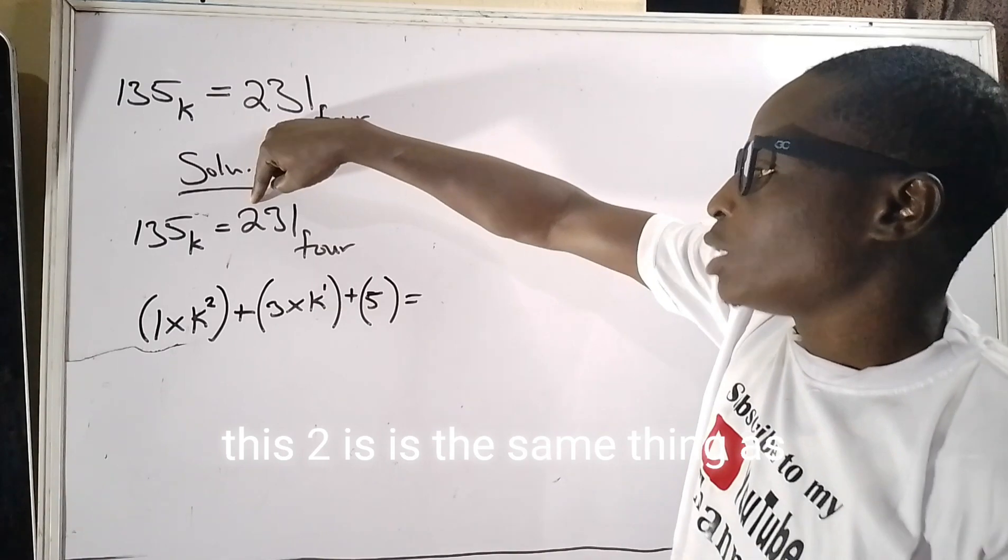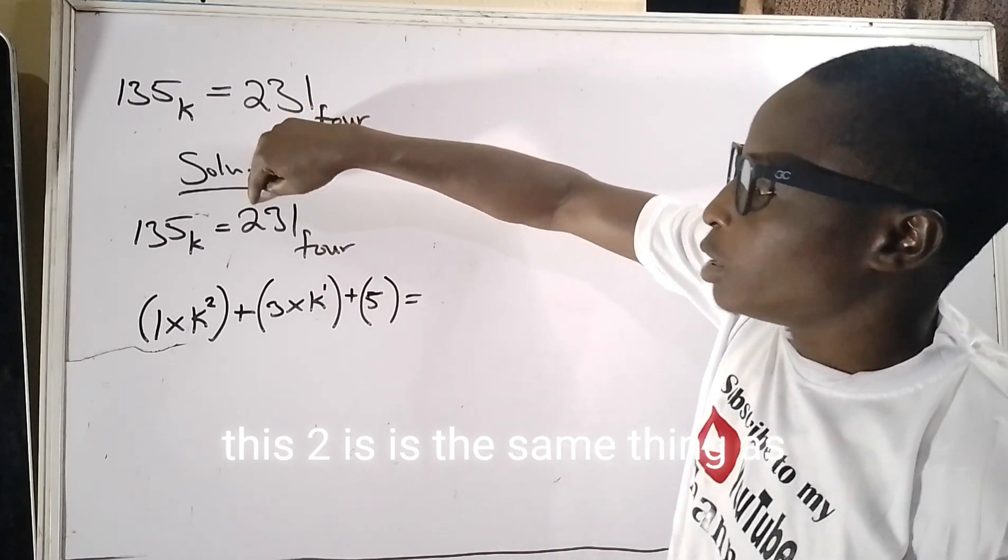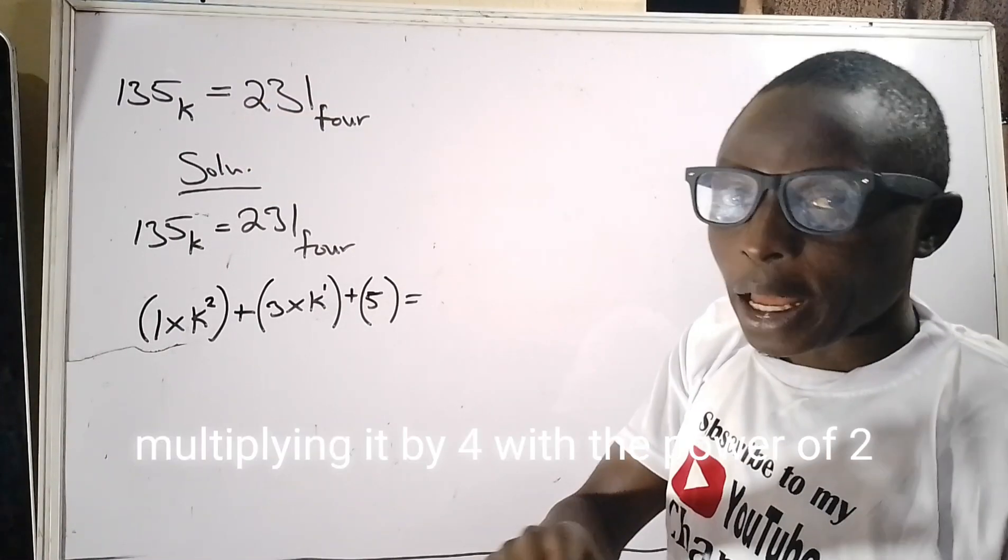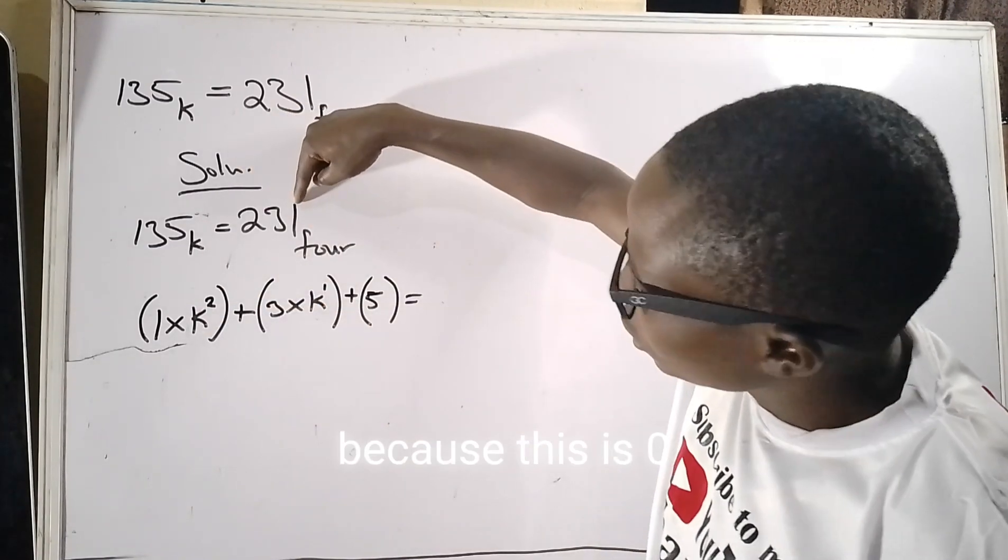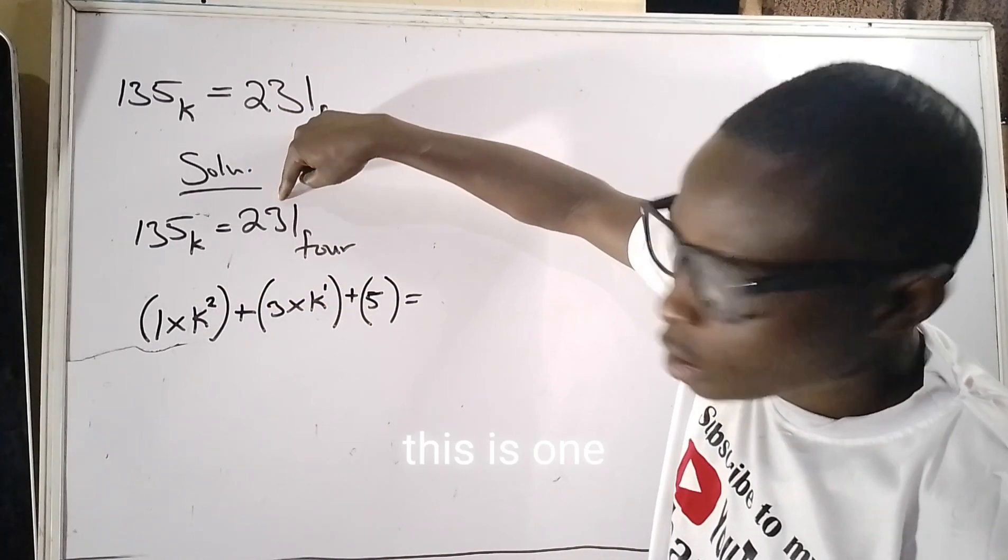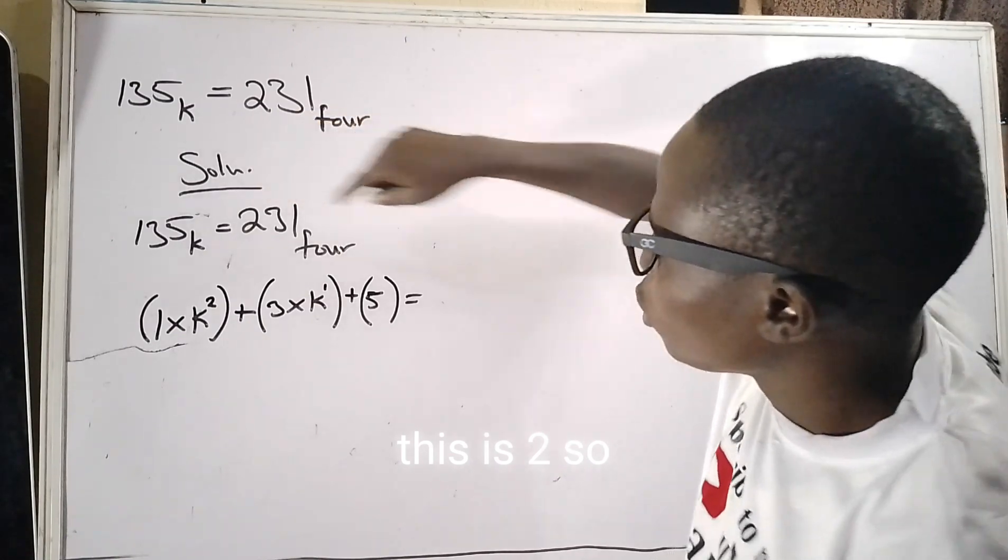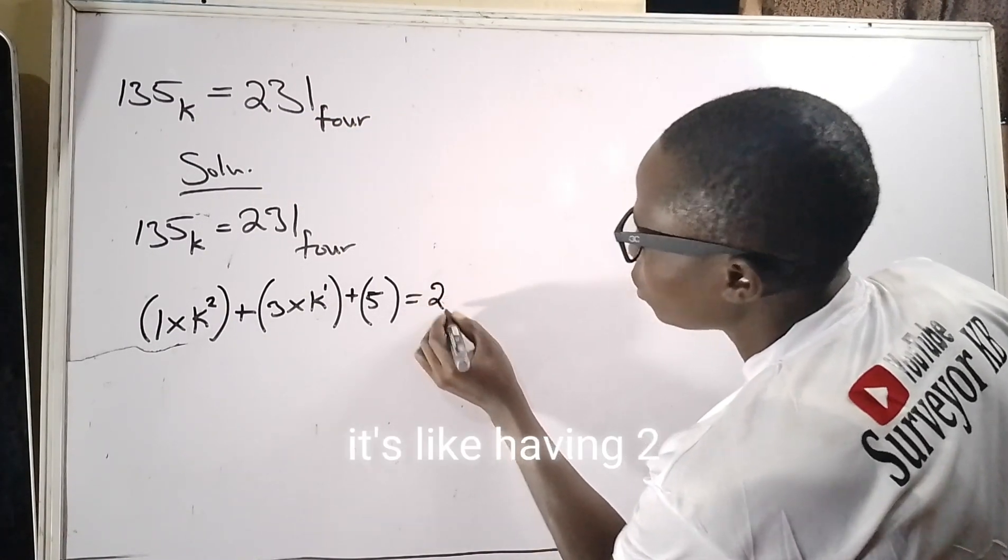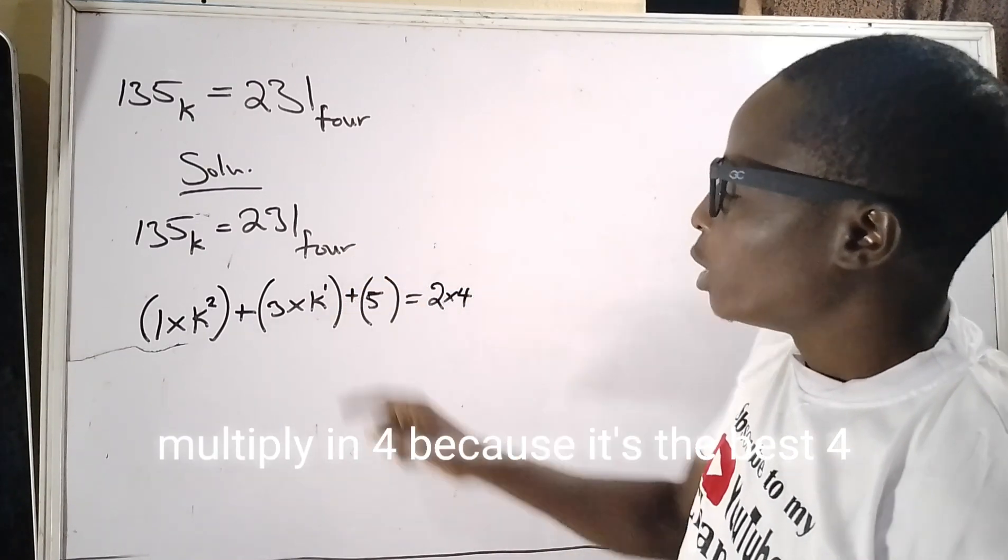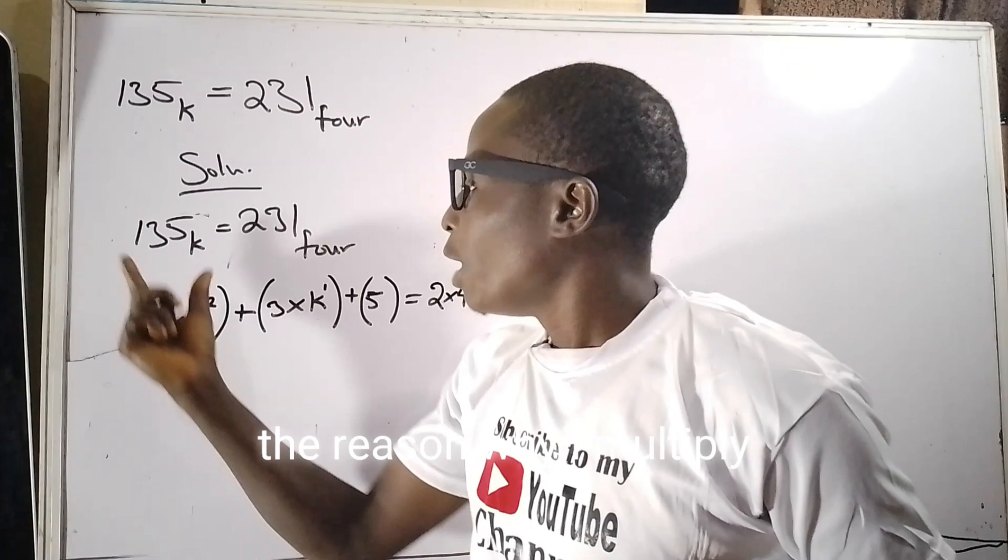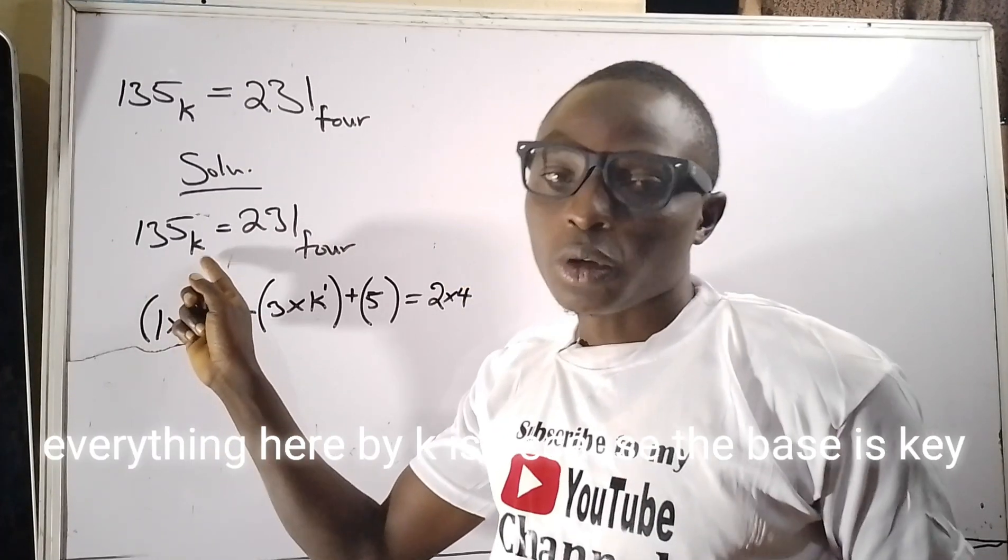So it equals: also this two is the same thing as multiplying it by four with the power of two, because this is zero, this is one, this is two. So it's like having two multiplying four because it's base four.